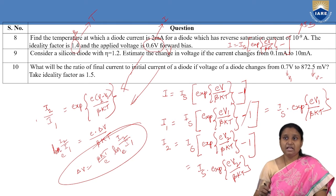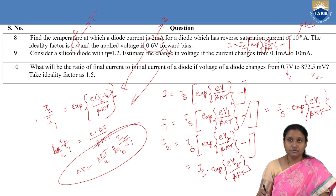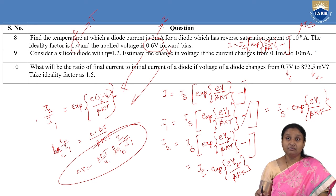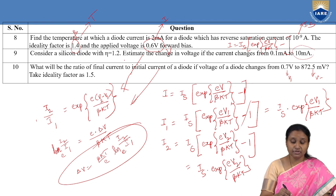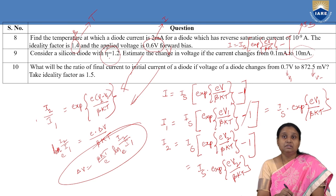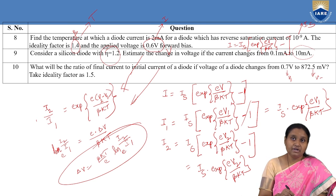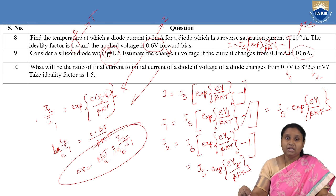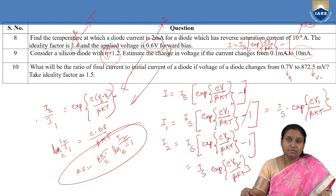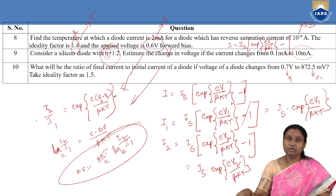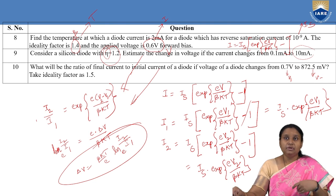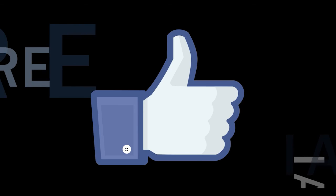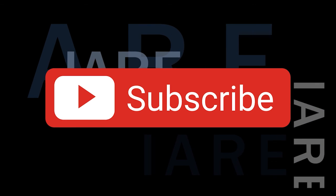The ideality factor can be represented as η or β. These are the various questions we can expect from semiconductor devices. With this I am going to end my session — thank you, like, share, and subscribe, and hit the bell icon for more updates.